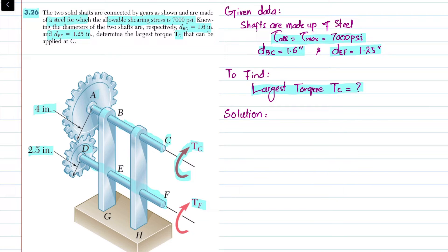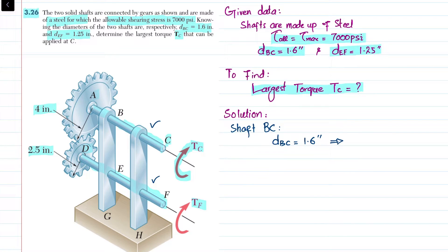We will first solve for shaft BC. The diameter of BC is given as 1.6 inch, so the radius c is equal to d_BC divided by 2, which gives c = 1.6 / 2 = 0.8 inch.